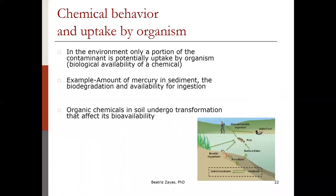The key question is: just because a substance is in air, water, or soil, does that mean an organism will take it up? The good news is not always, and not at the same amount. In the environment, only a portion of the contaminant is potentially taken up by the organism. There could be transformations — for example, mercury in sediment may be biotransformed by microorganisms and may not be available for uptake. The same happens with organic chemicals in soil that will be biodegraded by microorganisms and may not be as available to be taken up.